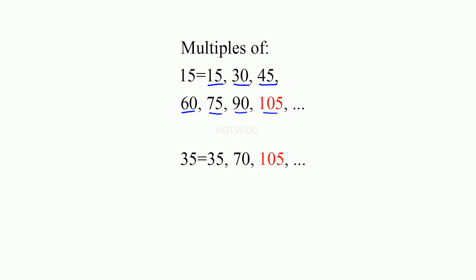Multiples of 35 are 1 times 35, 35. 2 times 35, 70. And then 105 and so on. We see that 105 is common to both multiples of 15 and multiples of 35. That is the least common multiple.